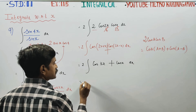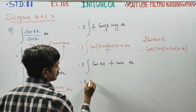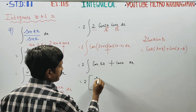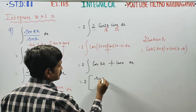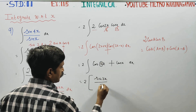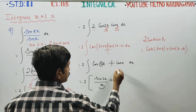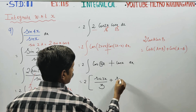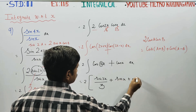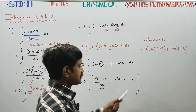Integration of cos is sin. Integrating cos 3X gives sin 3X by 3, and integrating cos X gives sin X. The final answer is 2 times sin 3X by 3 plus sin X, plus the constant C.